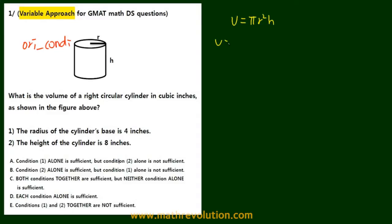V, the volume, is equal to pi r squared h. We have three variables: v, r, and h. And we already have one equation given here. This means that we need two more equations.